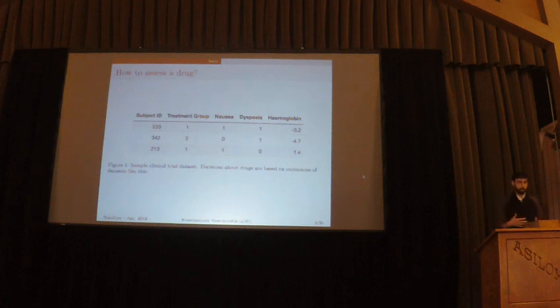Subjects are assigned randomly to a treatment group and a control group. The control group receives a placebo, the treatment group receives the treatment, and then you measure three effects or more. In this particular case I have three effects. Whether the individual experienced nausea, whether they experienced dyspepsia, and their levels of hemoglobin which is a marker for diabetes. The first two are binary, the last one is continuous. This is pretty typical for clinical trials datasets.